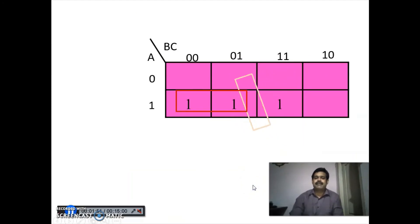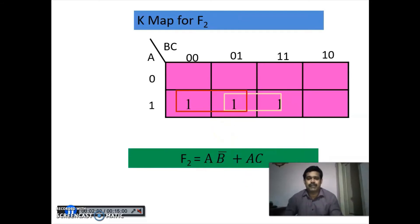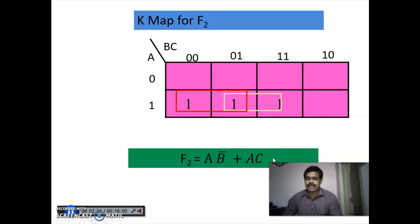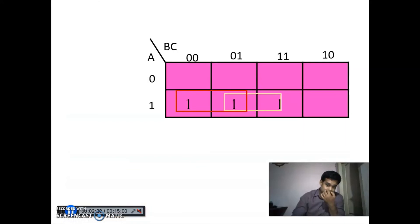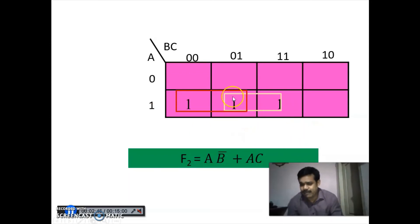The K-map for F2: plotting the minterms at positions 4, 5 and 7, we group them. The expression for the first pair is AB-bar and for the second pair is AC. So F2 equals AB-bar plus AC. Checking product terms: F1 has AC and BC; F2 has AB-bar and AC. Totally four product terms, but AC is common to both F1 and F2, so we take only one — giving only three product terms.